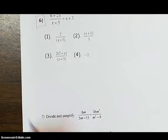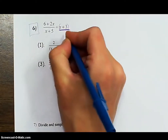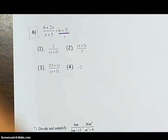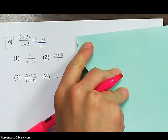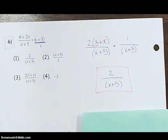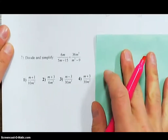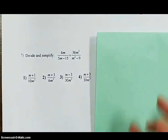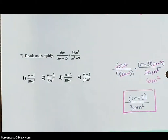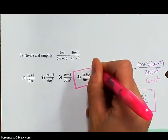I'd like you to try number 6 on your own and then put your answer into the computer. Remember, x plus 3 — put that over 1, so now you know what to do. Were you able to flip, factor, cancel, and end up with 2 over (x + 5), which was option number 1? Now try number 7 on your own. Were you able to change it to multiplication, flip, factor, cancel, and get (m + 3) over 30m squared, which would be option number 4?